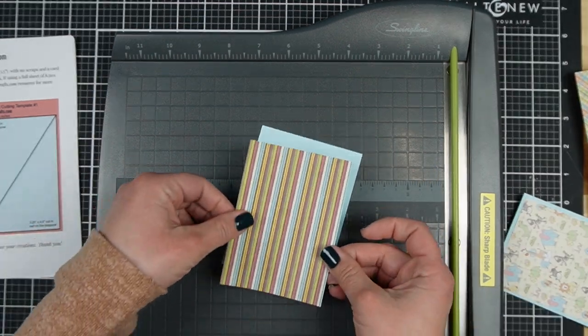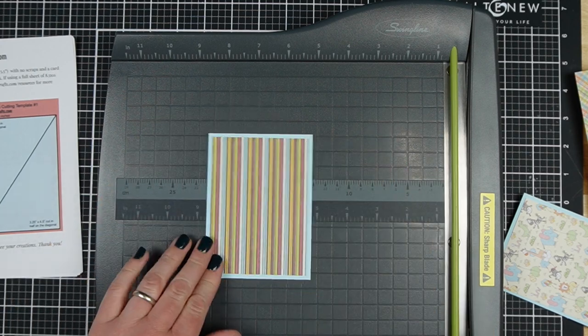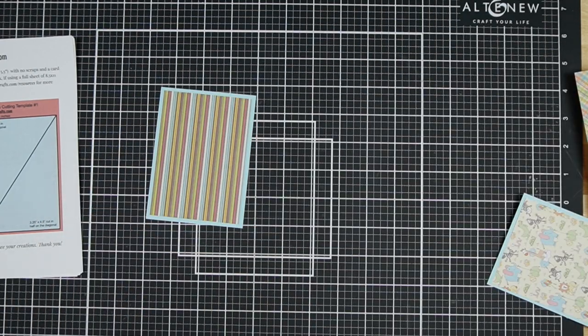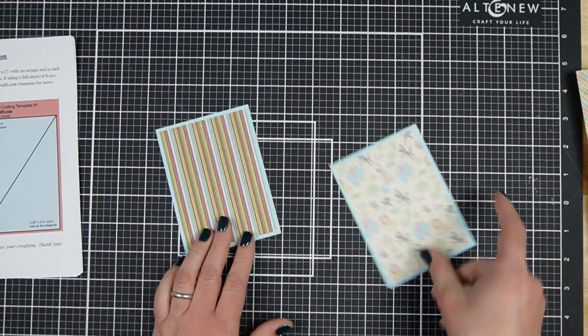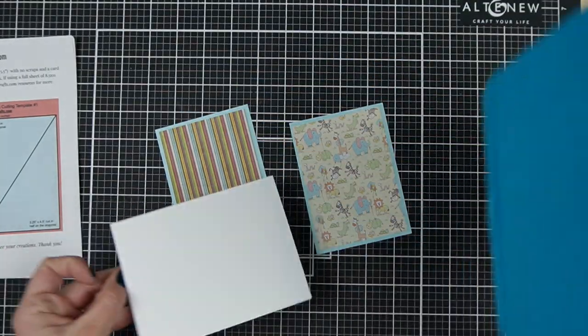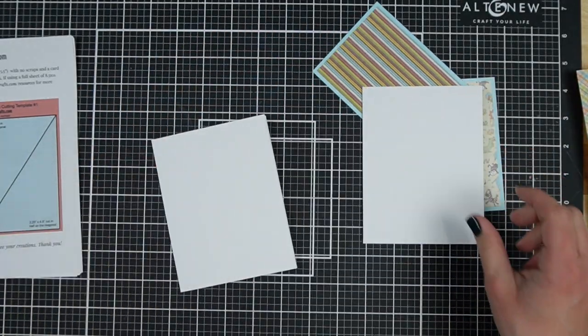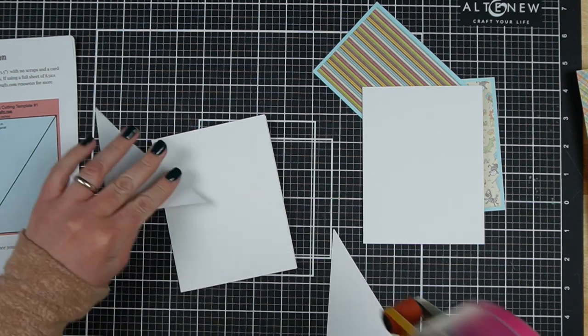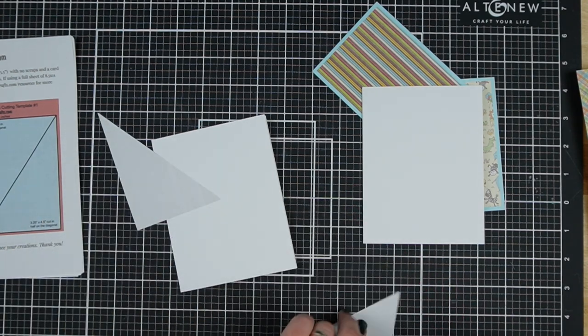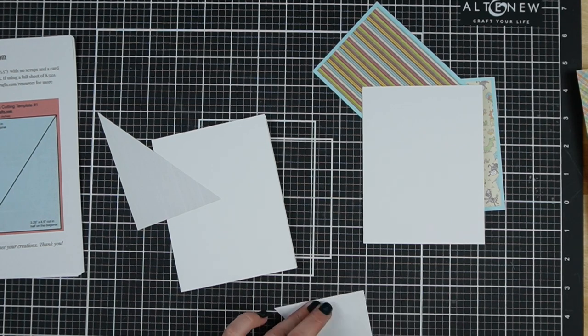I really wanted to help people if they had these paper pads to go through them more quickly and still have a good result. So this one, you cut the paper in half. So it's about four and a half by, or it's four and a half by three and a quarter. You use one of those as the main focal point of the card. And then you take the other one and you cut it on the diagonal and then you put it in the top and bottom corner.